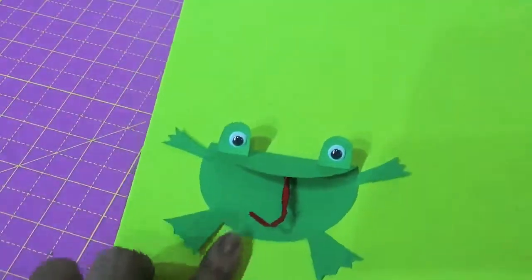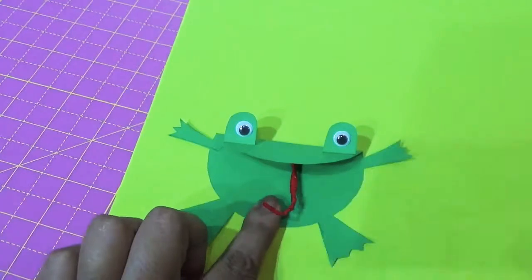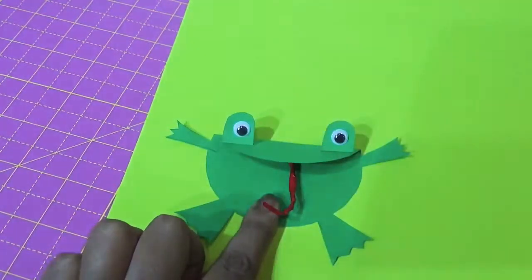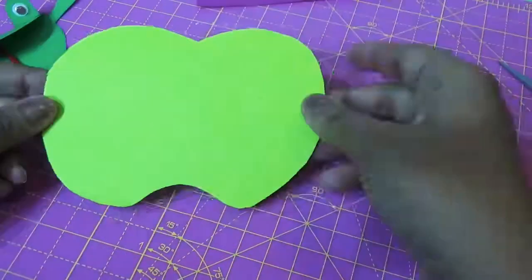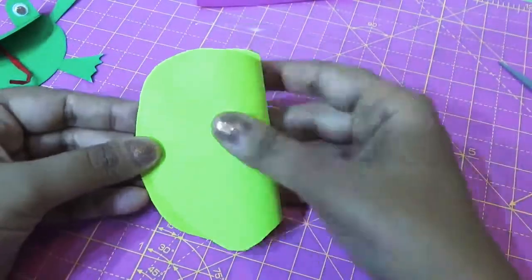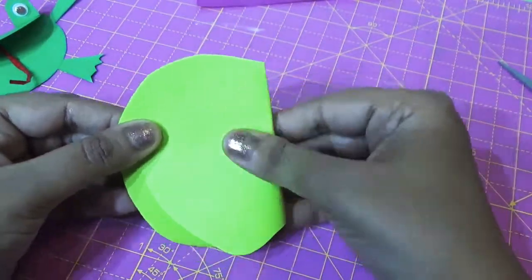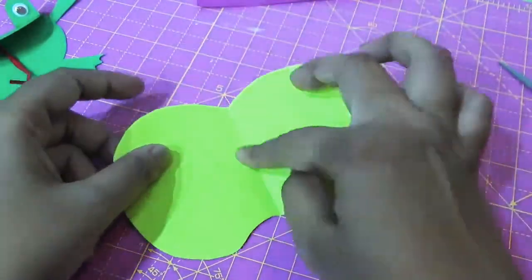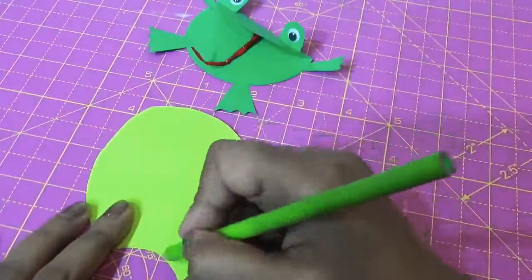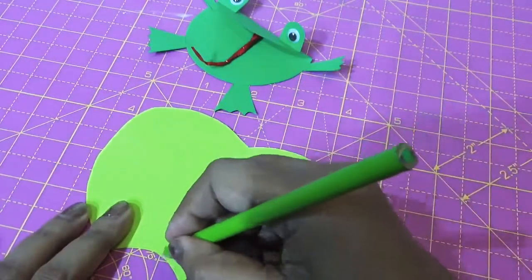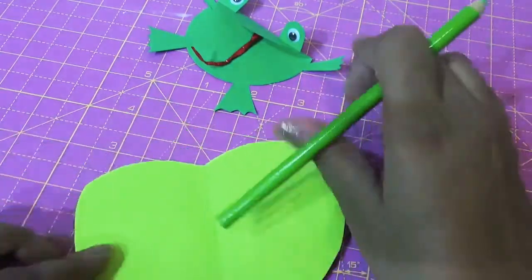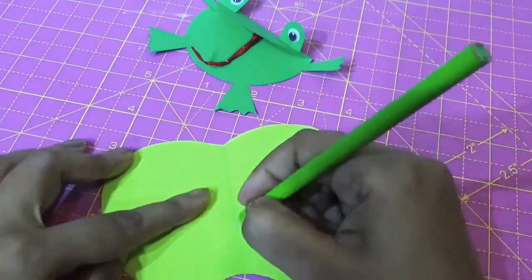Now I have to cut the leaf. I will cut it like this and fold it from the middle. I want this line, and from the green pencil I will shade it out.